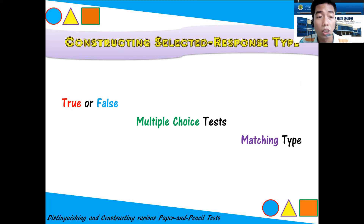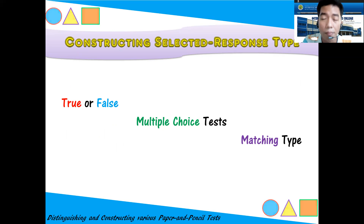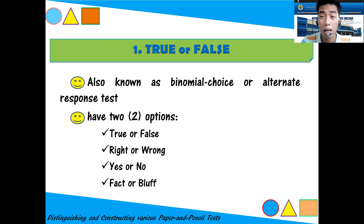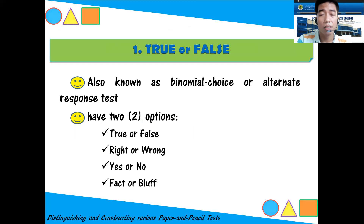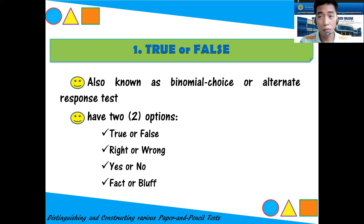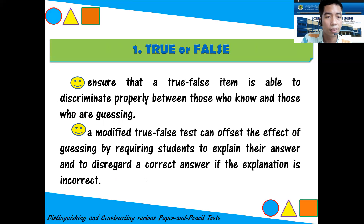Now for selected response types, we will discuss how to construct true-or-false items. This type is also known as a binomial choice or alternate response test — you have only two options: true or false, right or wrong, yes or no, fact or bluff. The key guideline is to ensure that the item discriminates between those who truly know the answer and those who are just guessing.